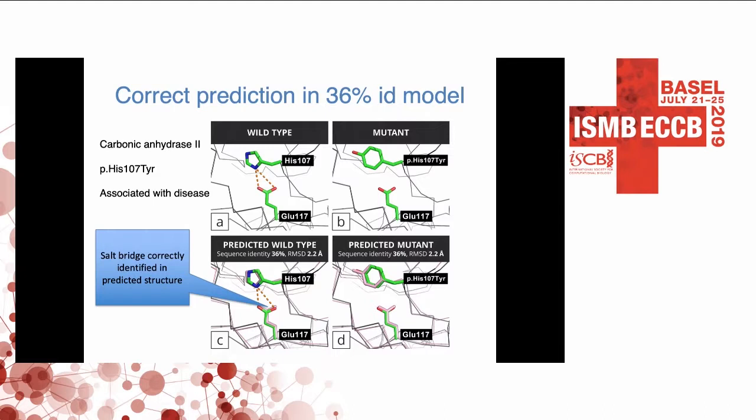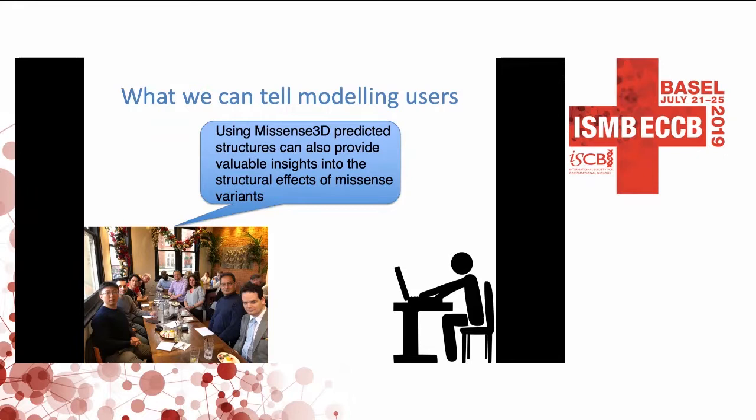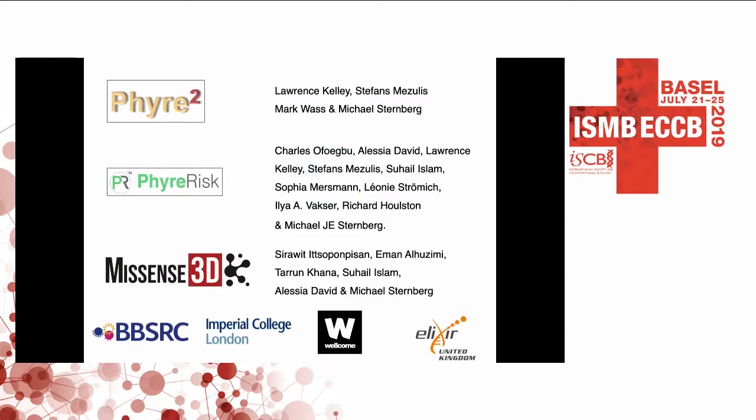Going back to the earlier example, with a 36% identity model we still generate the salt bridge in the model and still see that it is lost upon the variant. Clearly, we can use models to interpret the effects of variants. This is available as a web resource where you can see the variants and their sidechains. We can tell our users that yes, we can use structural models to consider missense variants. FIRE2 was largely developed by Lawrence Kelly; FIRE Risk was led by Charles Ofagbugo and Alessia David; and MissSense3D by Sirawit and Alessia. Thank you for your attention.